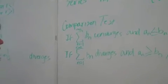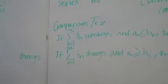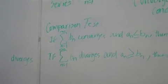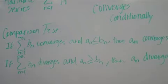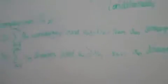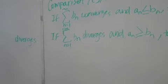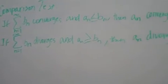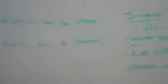Next test is your comparison test. So if you have two series, an and bn, if bn converges and an is smaller than bn for all terms as it expands out, then an is going to converge too. And the opposite is true, so if bn diverges and an is greater than bn for all terms, then an diverges as well.